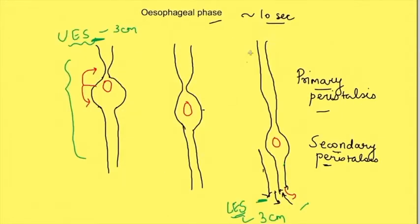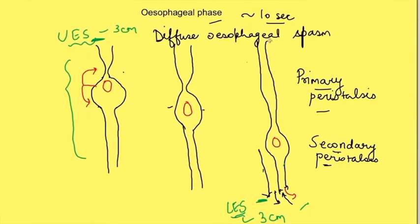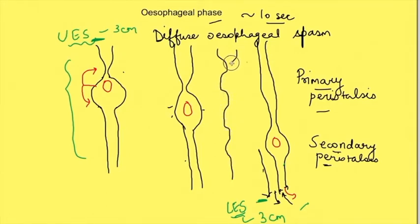If there is a problem with the coordinated peristaltic wave, there is a condition known as diffuse esophageal spasm. In this condition, contractions are not followed by relaxation; instead there are multiple points of contraction, which does not happen in normal peristalsis. This type of esophagus is known as cork screw esophagus.